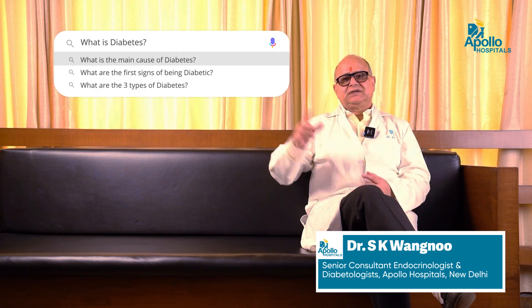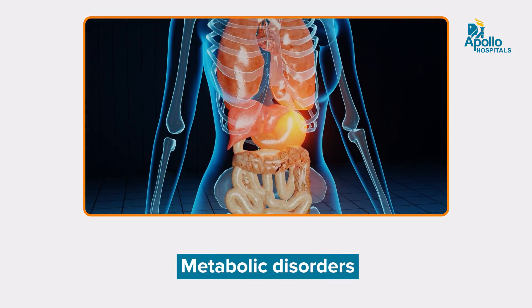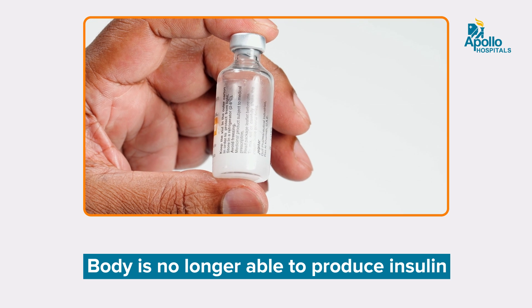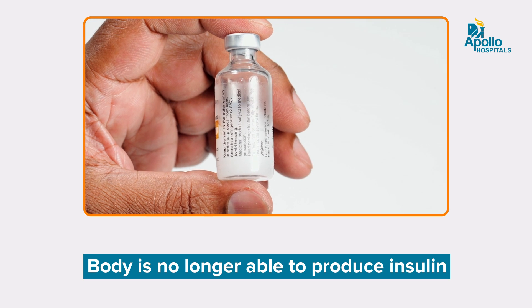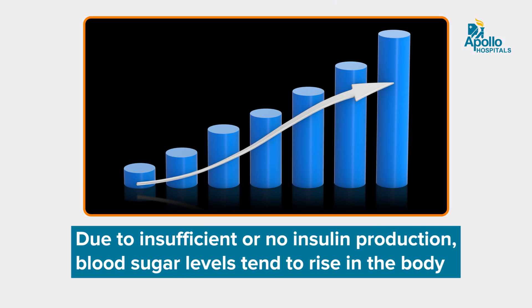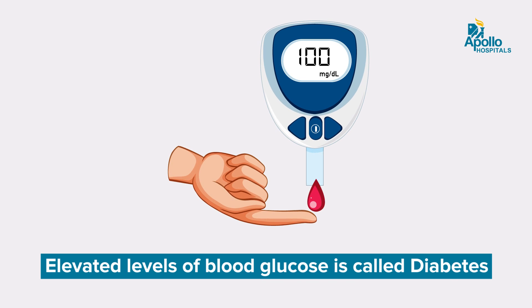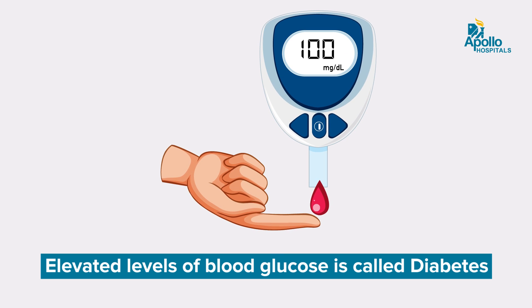What is diabetes? Diabetes is a metabolic disorder where the body's insulin, which is important to control blood sugar, is either being produced in very less quantity or it is not being produced at all. Because of that, the body's blood sugar tends to rise. So in layman terms, diabetes is a state of high sugar because of the inadequate action of insulin.